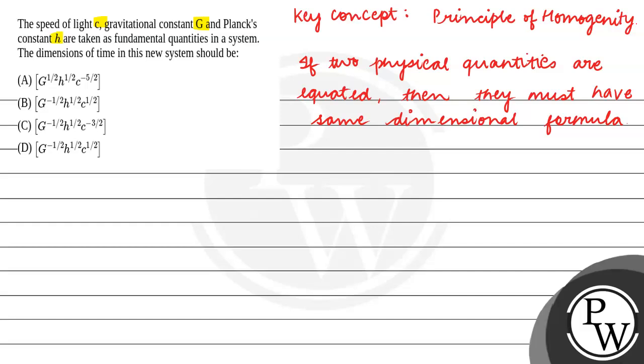So let's move on to the question. Time in terms of speed of light, gravitational constant and Planck's constant. This means T is dependent on C to power x, G to power y, and h to power z. Now we have c, G, and h dimensions. C is speed of light, so the dimensions will be distance upon time, that is L T minus 1.